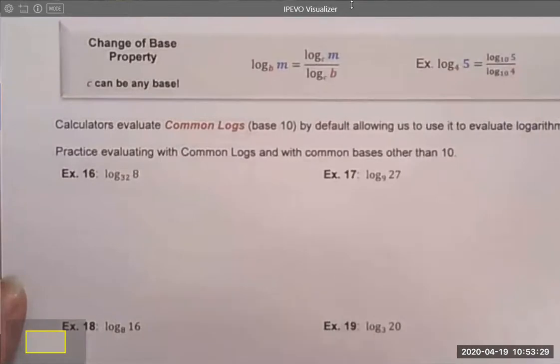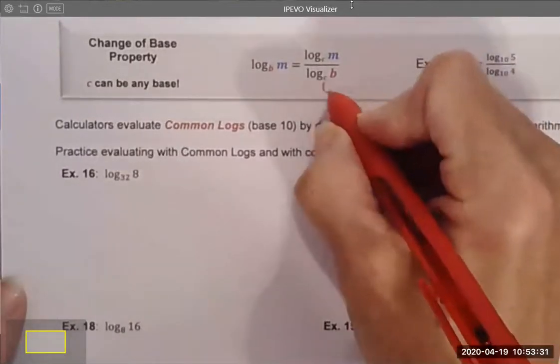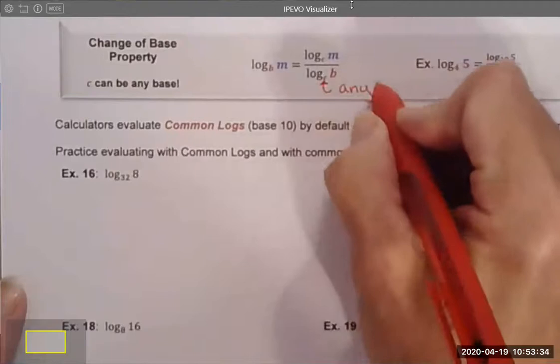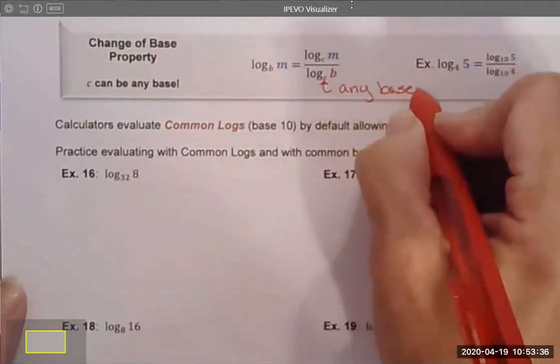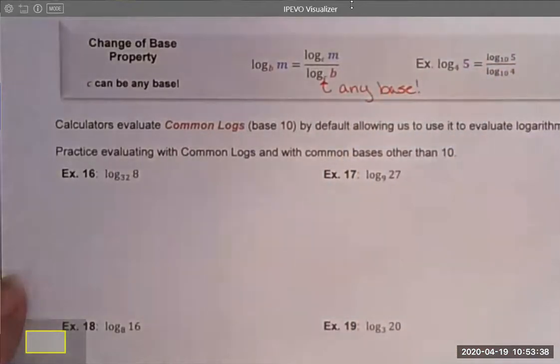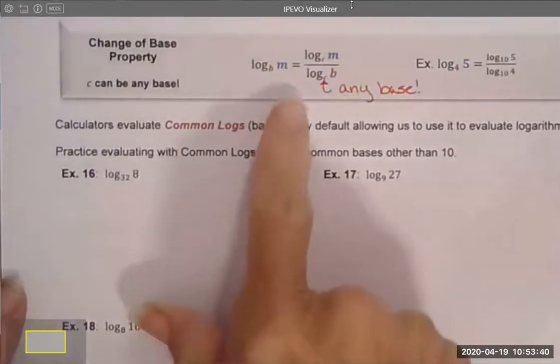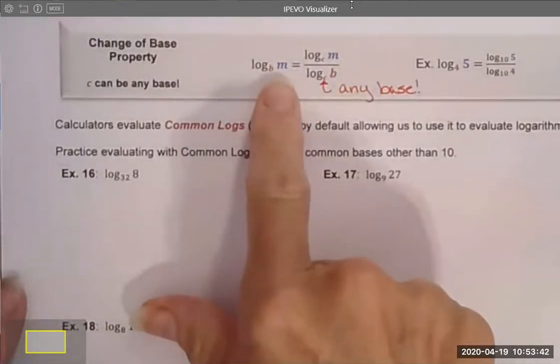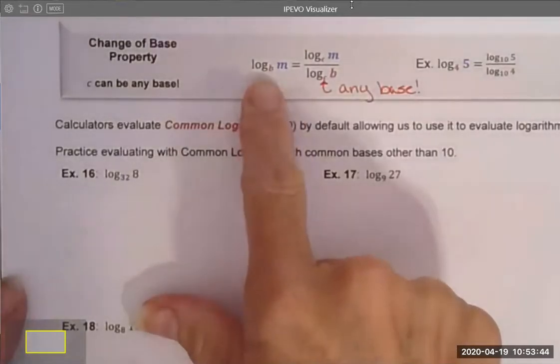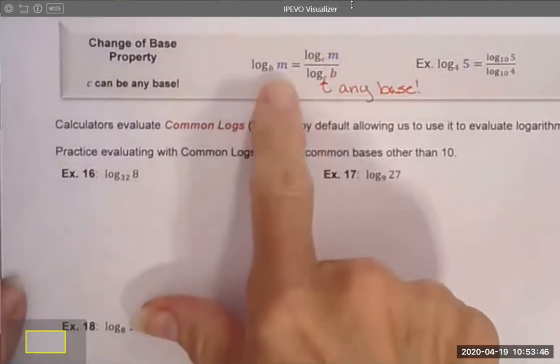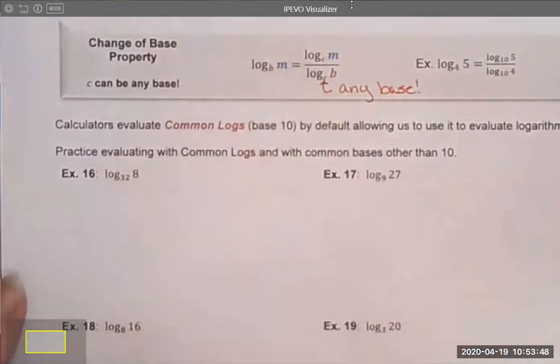So I am going to put a note here that this little c, he can be any base. That's exciting. Any base in the entire world. My original base falls into the denominator and my m is going to jump into the numerator. So I can rewrite this as a division statement.